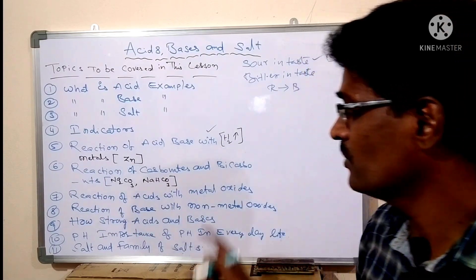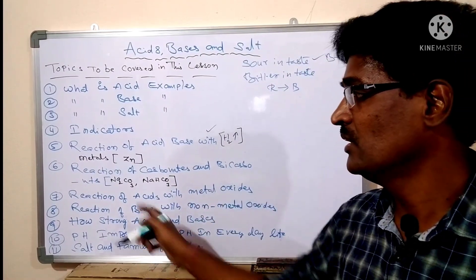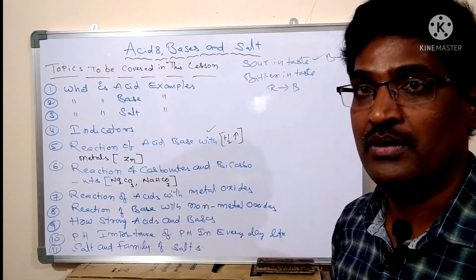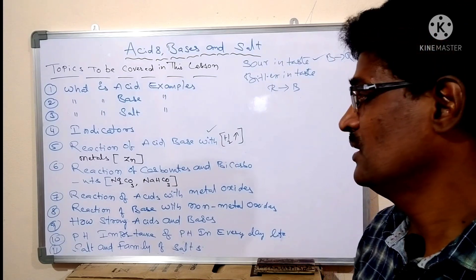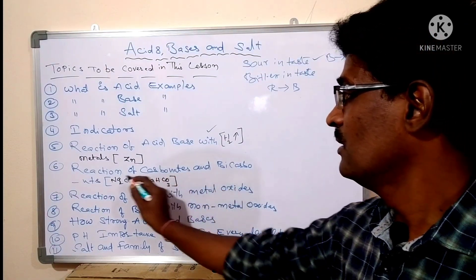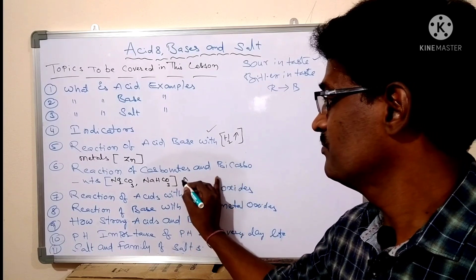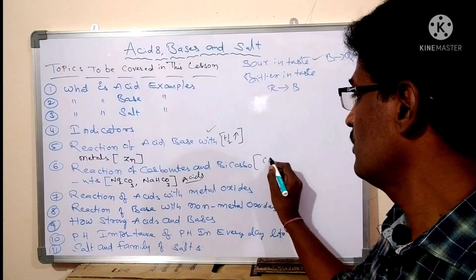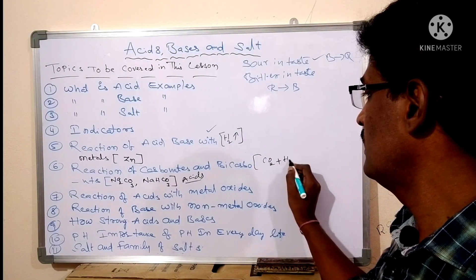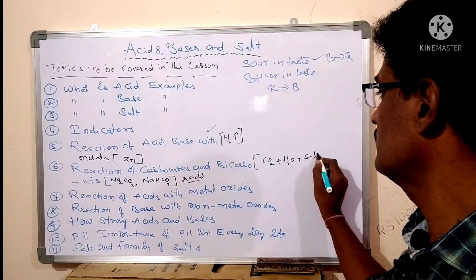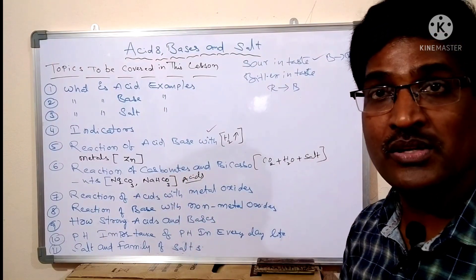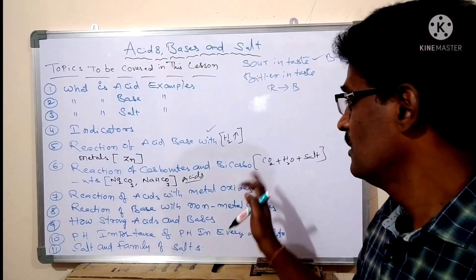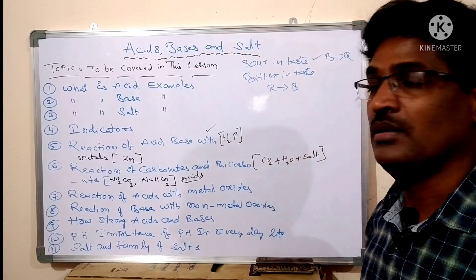Next topic: reaction of carbonates and bicarbonates. Na2CO3 is a carbonate, and NaHCO3 is a bicarbonate. If carbonates and bicarbonates react with acids, they produce carbon dioxide, water, and salt.